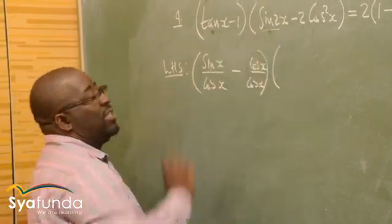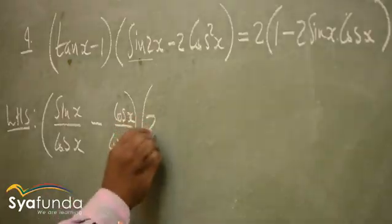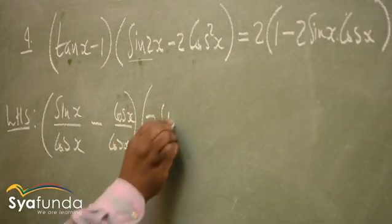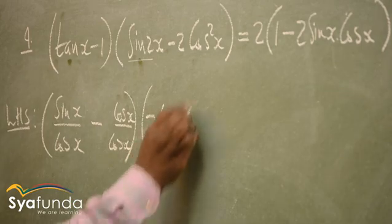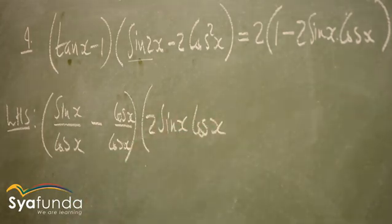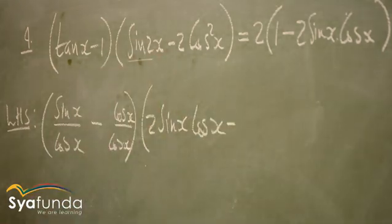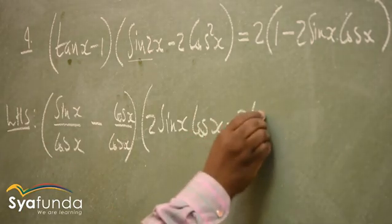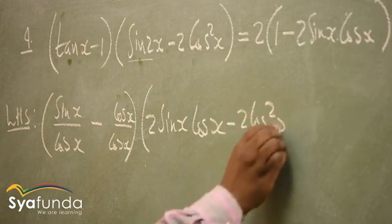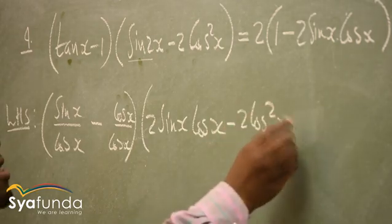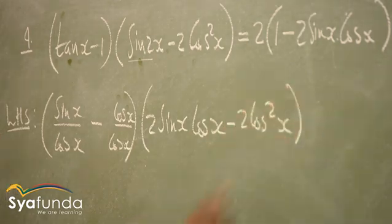So this will be 2 sin x cos x, minus — this I don't know, so I write it as it is — it's minus 2 cos squared x. This is what I have so far.